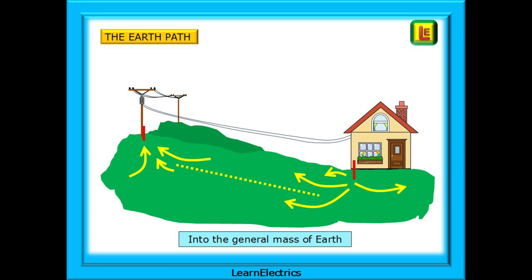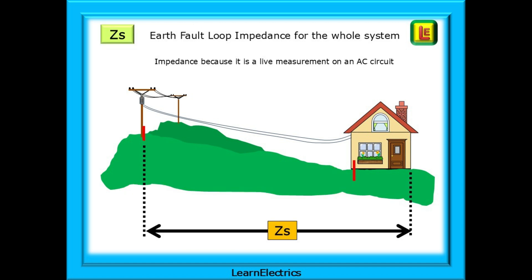The earth path, during a fault, relies on the general mass of earth. Electrons will be displaced into the soil in the vicinity of the house earth rod, and electrons will be taken up by the earth rod at the overhead pole. ZS is the earth fault loop impedance for the whole system. If there is an earth fault, it is a path from the point of fault in the dwelling, through the internal earth or CPC, out of the property, and through the earth to the supply transformer, and then back along the line conductor to the point of fault.